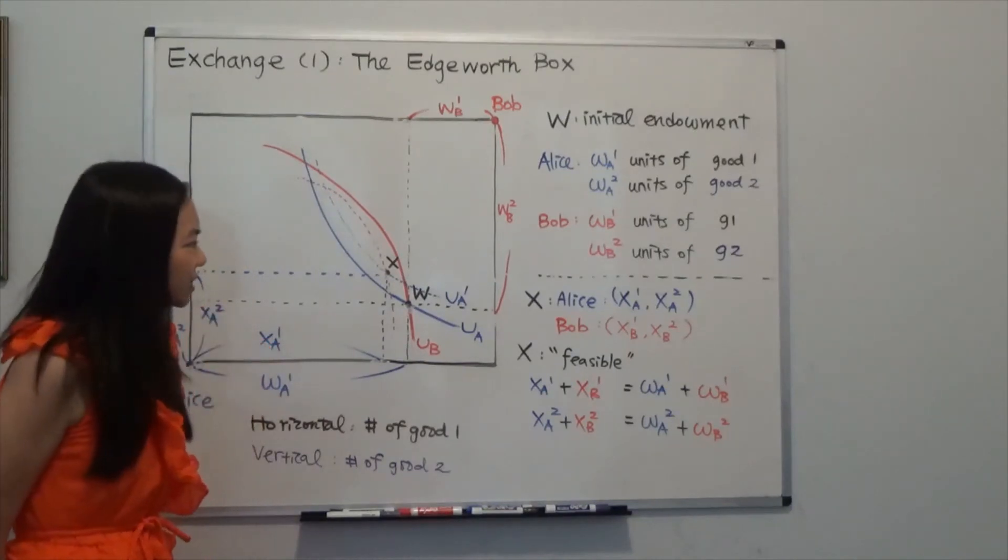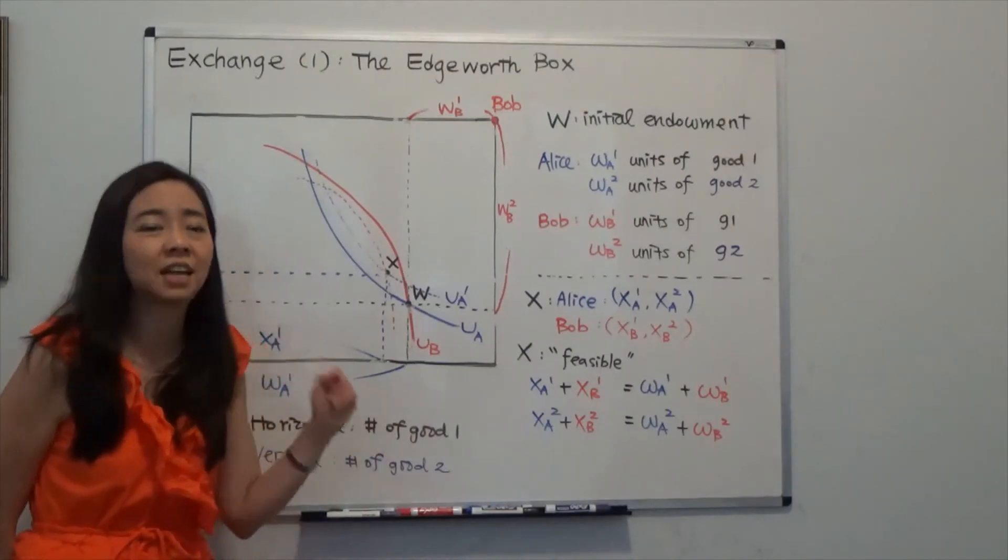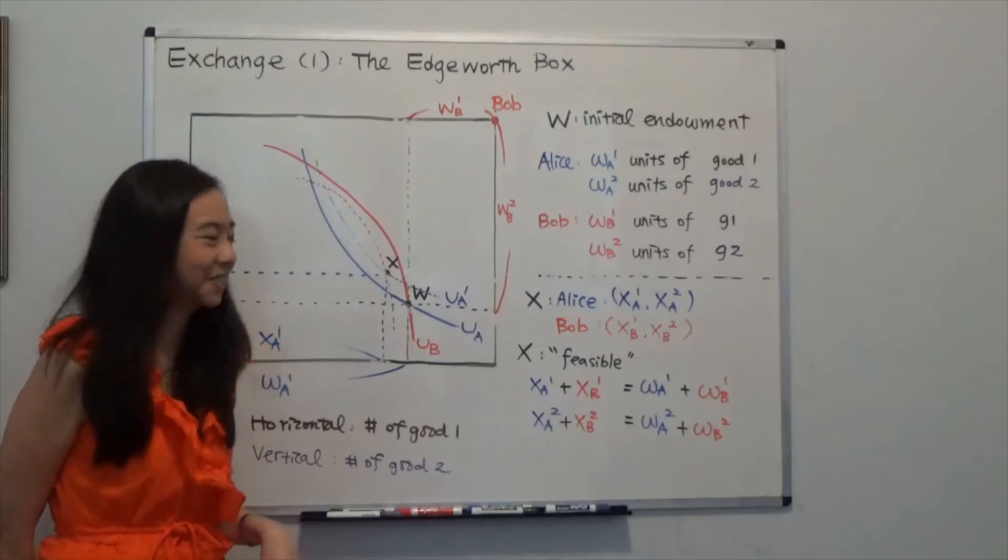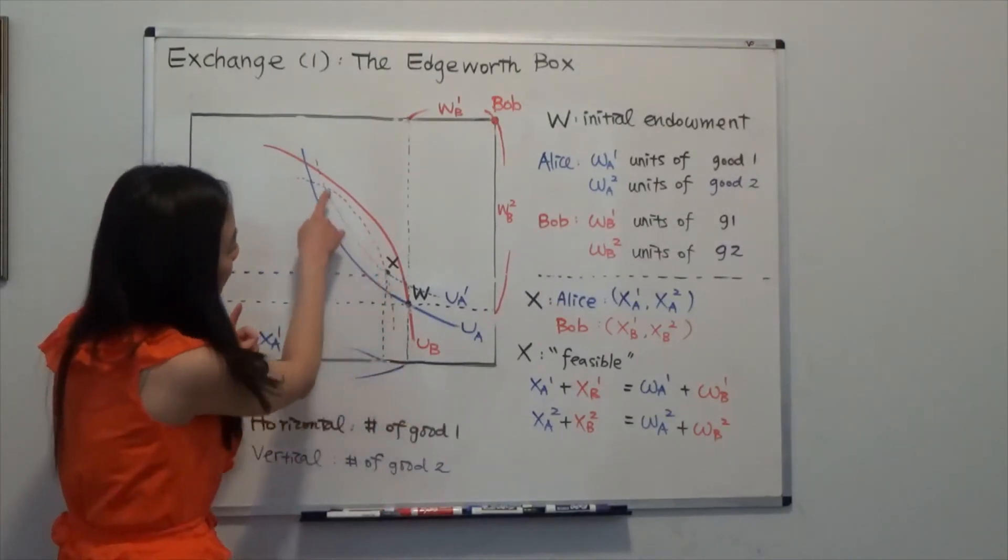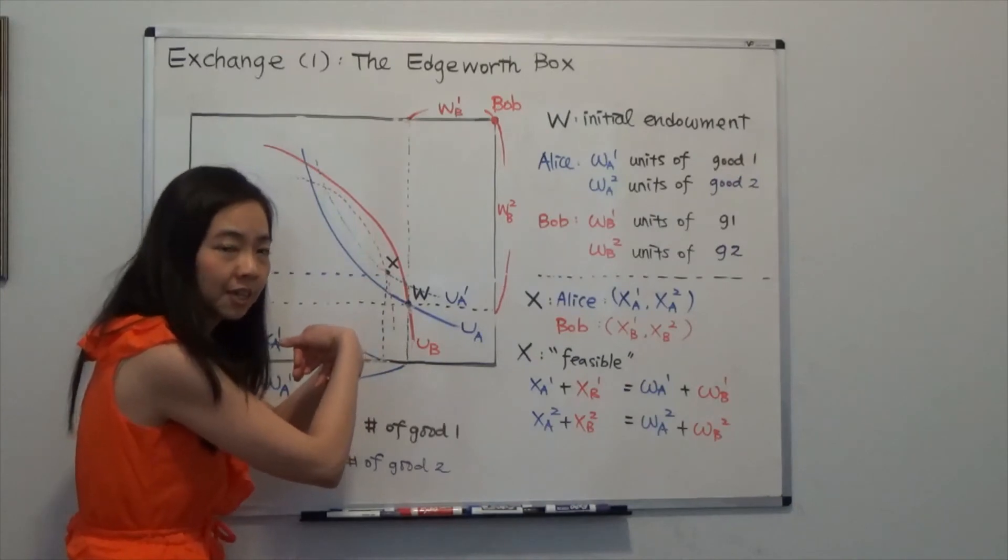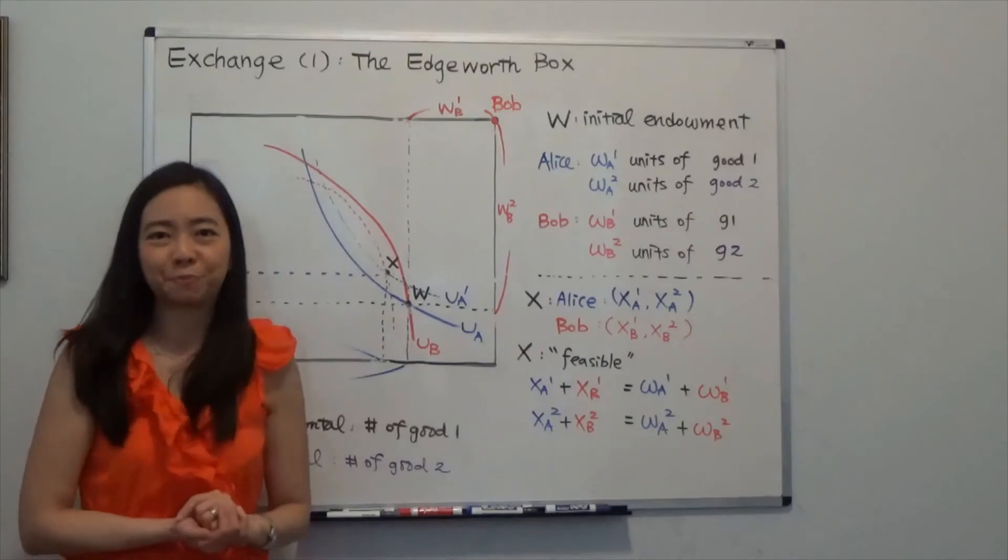Now you'll be asking, well, can we do better than X? Can both Alice and Bob's utility level be improved from point X? And the answer is still yes. As long as you see the indifference curve of Alice and Bob are intersecting with each other instead of being tangent to each other, then there is room for improvement.